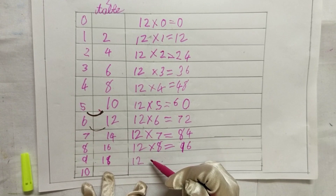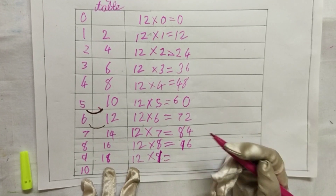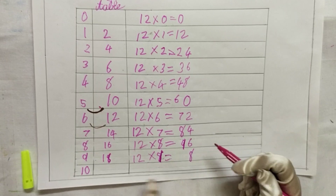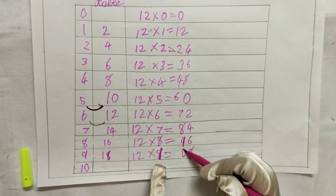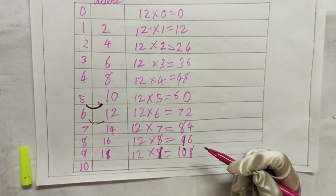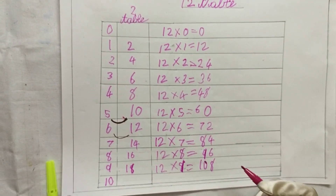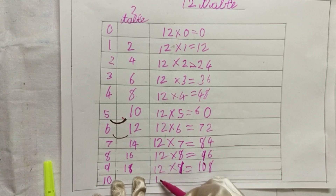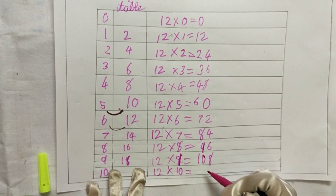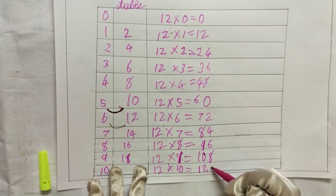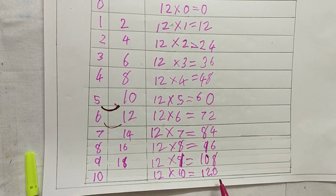And for 12 into 10: we get 100, but from there we just decide what it is — 12 into 10 is 120.